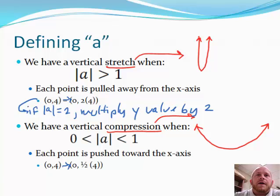So when we're defining what A looks like, we have a vertical stretch. You have a vertical stretch when the absolute value of A is greater than one. So if you have any number, whether it's positive or negative, you take the absolute value of it. If it's higher than a one, you're going to have a stretch, which makes your graph or your shape skinnier.